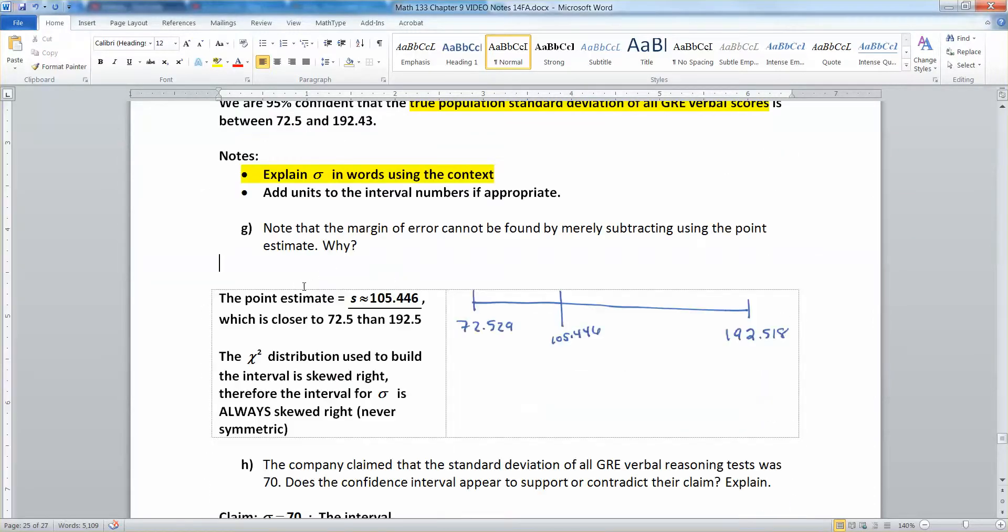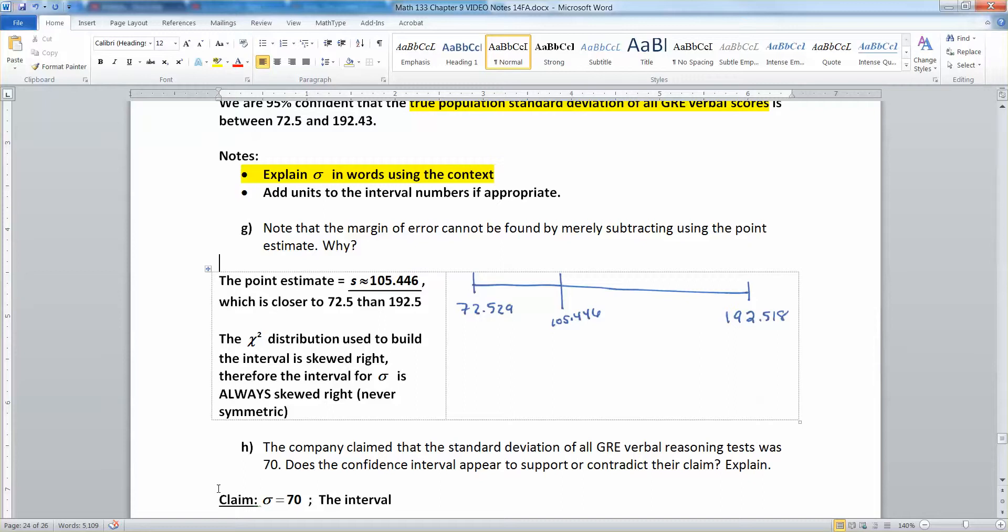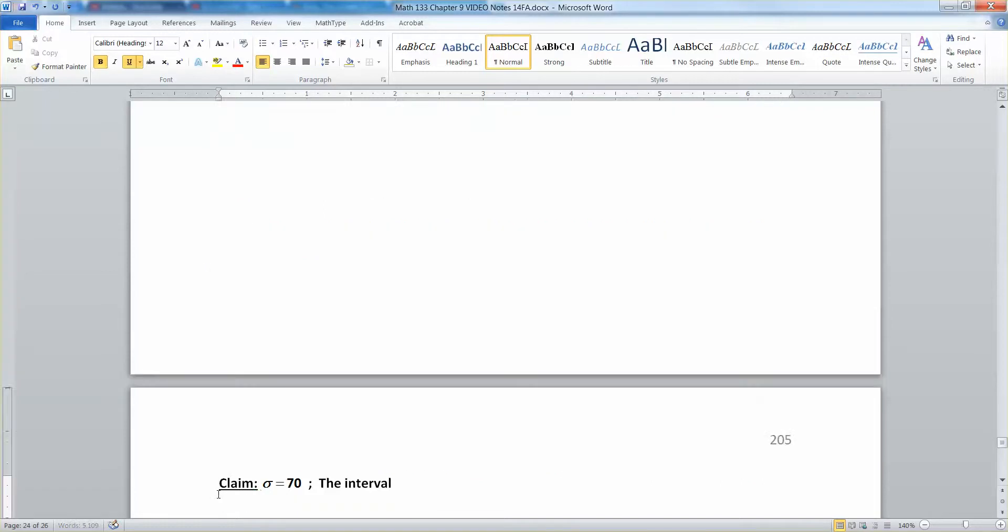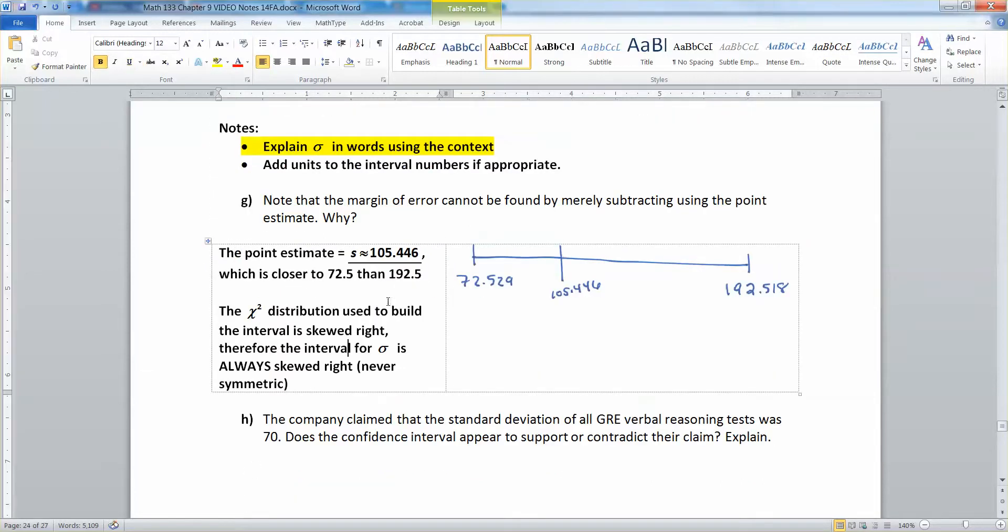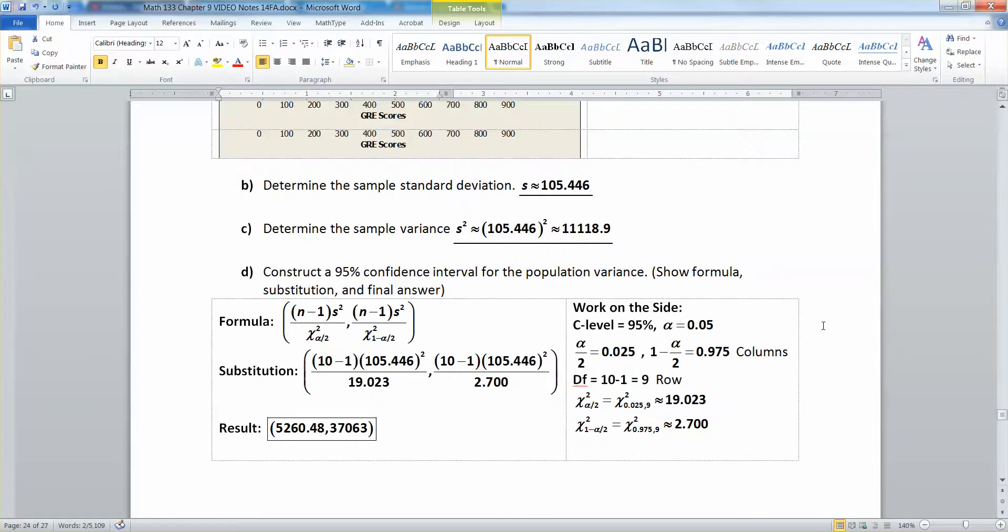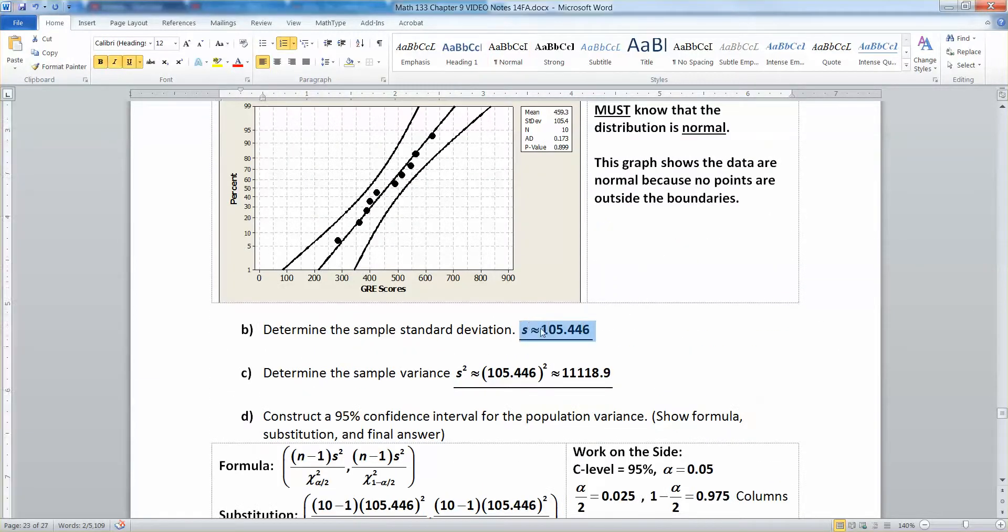And here's why. The point estimate, which is S, which was 105.446, we found it earlier. We found it a page ago using our calculator right there. 105.446.